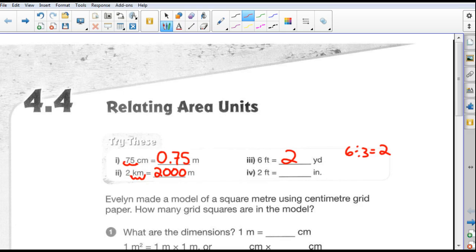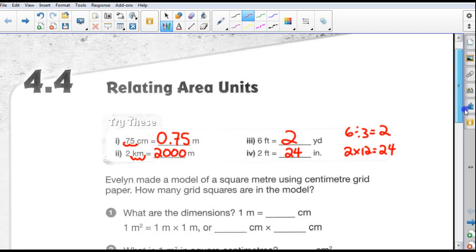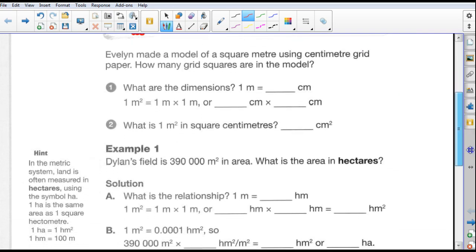Two feet is how many inches? Well, we know that there's 12 inches per foot. We have two feet. So we can just take two times 12 equals 24. And so two feet is the same as 24 inches. Okay, so that's just some more.